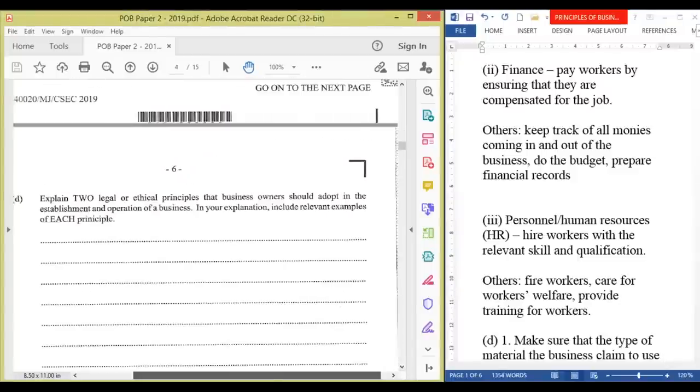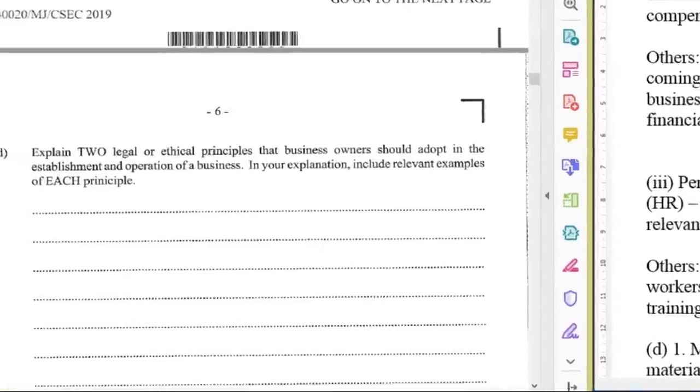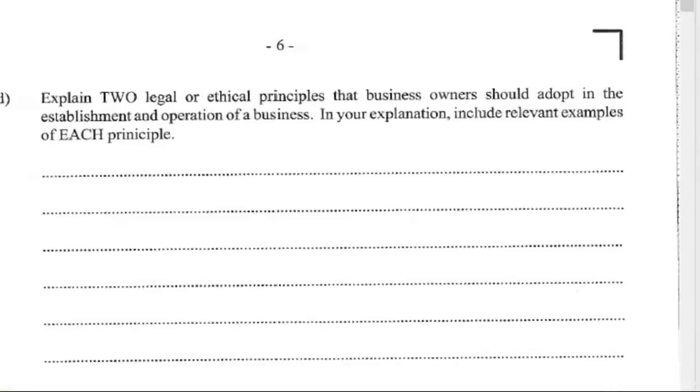Explain two legal or ethical principles that business owners should adopt in the establishment and operation of a business. In your explanation, include relevant examples of each principle. Take note that not only are you being asked to explain, but you are to give examples for each principle.